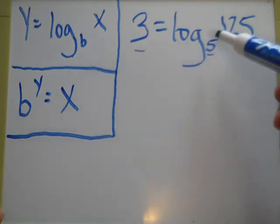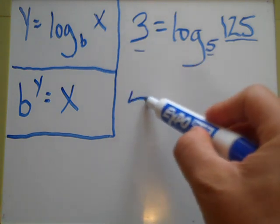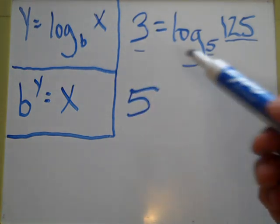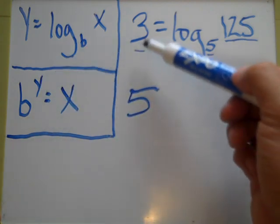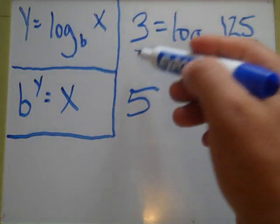What is b? b is 5. So you write 5. Right here it's asking for the exponent y up here. Y is what? 3, right?